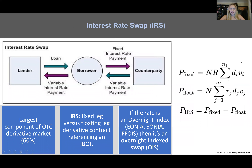Interest rate swaps: you are exchanging funds between a lender and borrower. The lender makes a loan to a borrower who then makes fixed rate interest payments to a counterparty, and the counterparty gives a variable interest rate payment — an IBOR, currently LIBOR or USD LIBOR, transitioning to SOFR for U.S. interest rate swaps at end of 2021. It is a simple fixed-versus-floating derivative contract, and it makes up the largest component of the OTC derivative market.